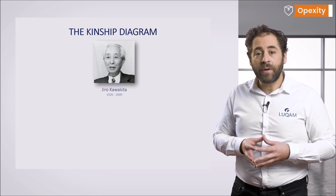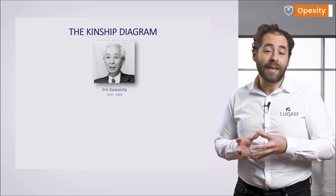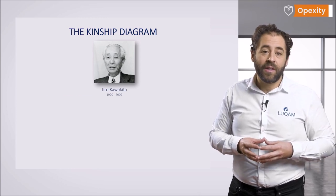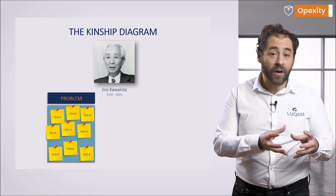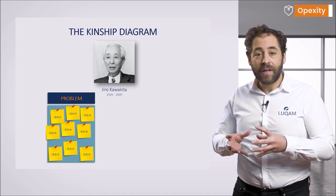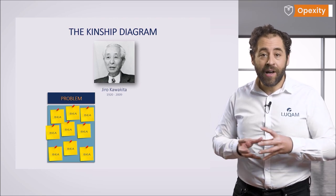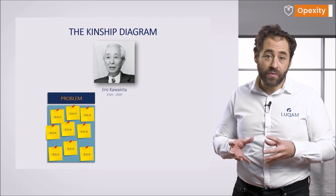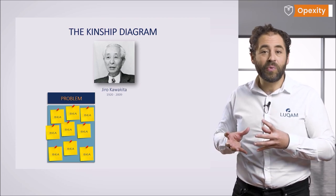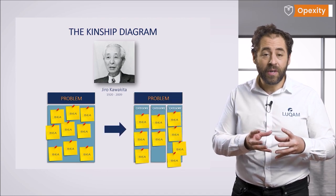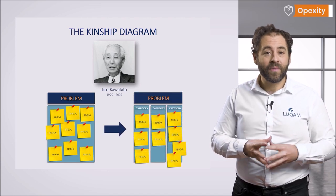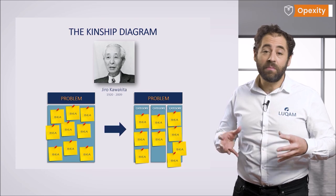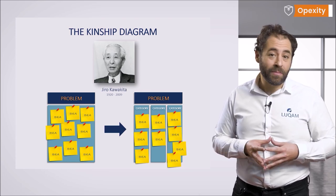In 1951, Jiro Kawakita began to work on the analysis of data collected during his Himalayan expeditions. This data was written on individual cards and was qualitative, unmeasurable, unique, and described certain behaviors. The attempts at a logical analysis of such diverse facts did not yield results until Kawakita realized that by grouping the data, it gets quite a different meaning — which was the beginning of his work on the KJ method and its simplified form, the kinship diagram.